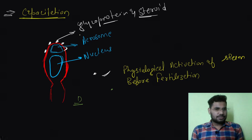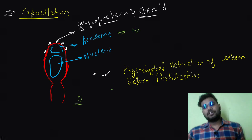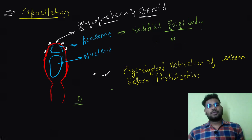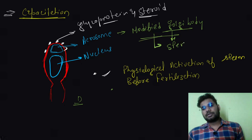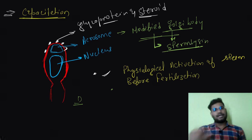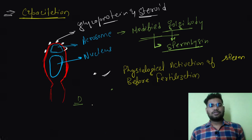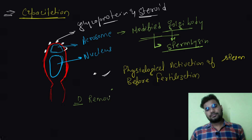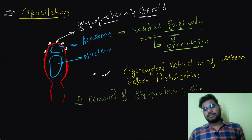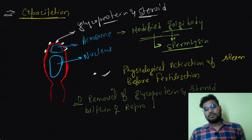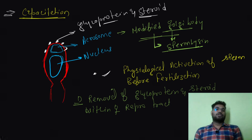The acrosome is nothing but a modified Golgi body. Because it is a modified Golgi body, it has synthesized enzymes inside it. These enzymes are called sperm lysins — we will understand them in detail when we discuss how sperm attaches to the egg during fertilization. So to summarize: capacitation means physiological activation of the sperm before fertilization, and it involves removal of glycoproteins and steroids within the female reproductive tract.